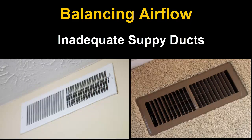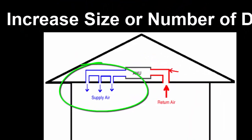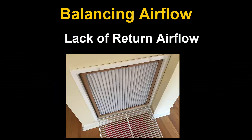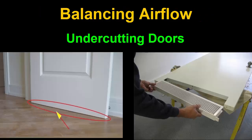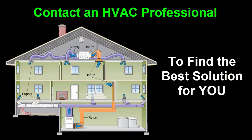Balancing airflow: some rooms may be hard to heat and cool because of inadequate supply ducts or grills. You may need to increase the size of the supply duct or add an additional duct to provide the needed airflow to the room. Any rooms with a lack of sufficient return airflow may benefit from relatively simple upgrades, such as installing a new or larger return air register, undercutting doors for increasing return airflow, or installing a jumper duct to create an airflow connection between rooms. To see which one of these solutions is best for your problem, contact an HVAC professional.